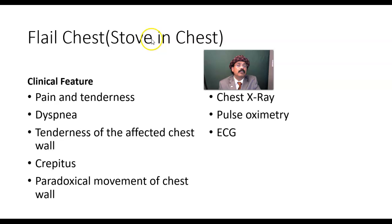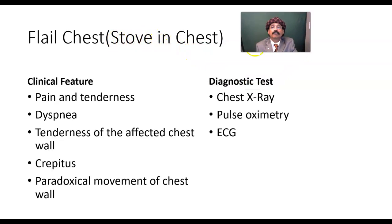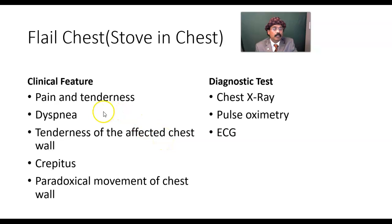The clinical features of flail chest include: pain and tenderness — rib fracture is extremely painful, and in flail chest we have significant pain and tenderness; dyspnea (difficulty in breathing); tenderness of the affected chest wall; crepitus due to entry of air into the subcutaneous tissue; subcutaneous emphysema; and paradoxical movement of the chest wall segment, as we discussed.